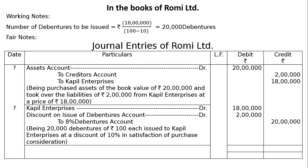Discount on Issue of Debentures Account debited Rs. 2 lakhs — that is 20,000 debentures at the rate of Rs. 10 each equals Rs. 2 lakhs — to 8% Debentures Account credited Rs. 20 lakhs. Being: 20,000 debentures of Rs. 100 each issued to Kapil Enterprises at a discount of 10% in satisfaction of the purchase consideration.